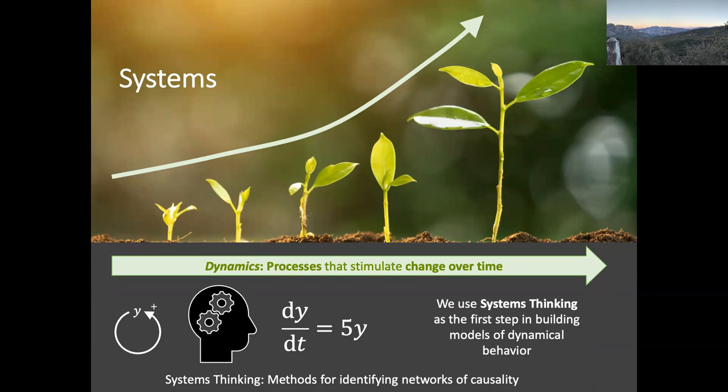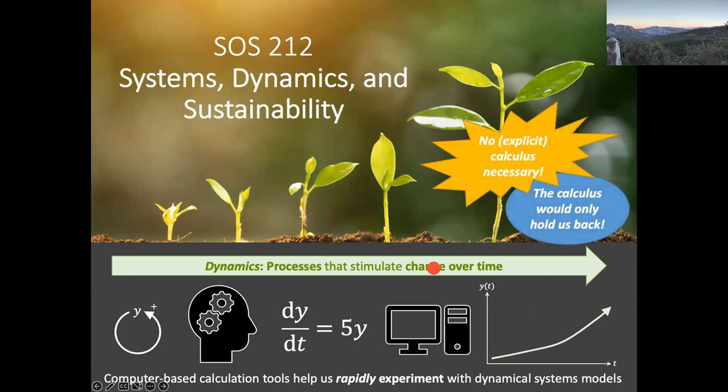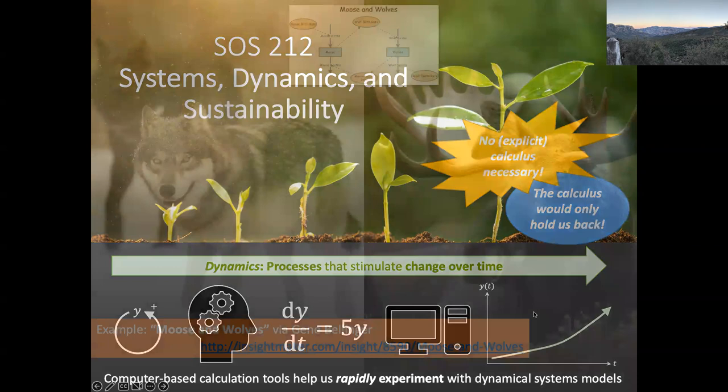That's what we're really going to focus on: given known sets of interdependencies among variables in sustainability problems, can we use our knowledge to build simple expressions — not complicated calculus expressions, but simple expressions that capture those interdependent entities — and then allow a computer to unroll them so we can make quantitative predictions about how a system might behave over time? That's what we're doing here, using computer-based tools to do the math for us.